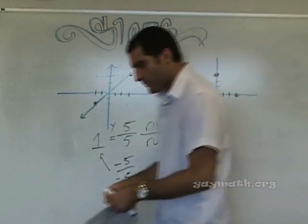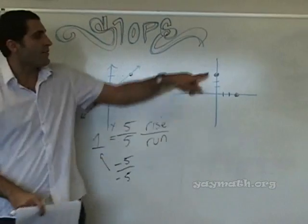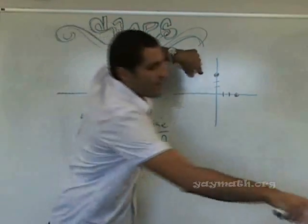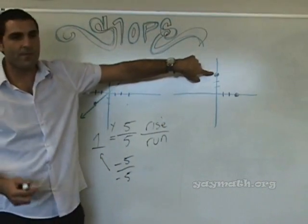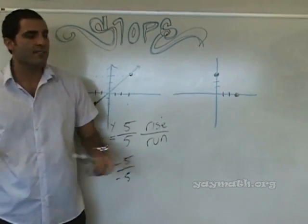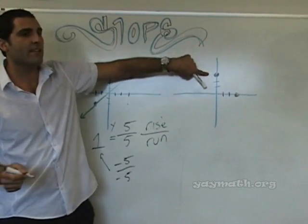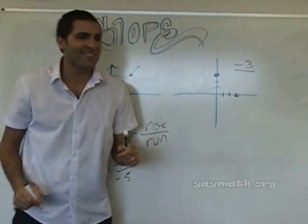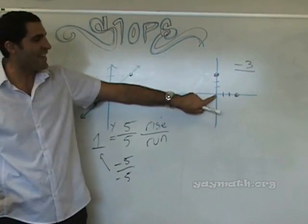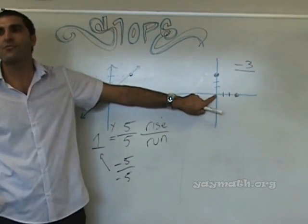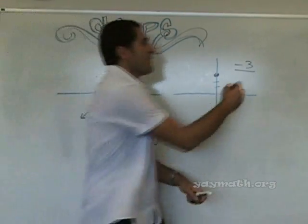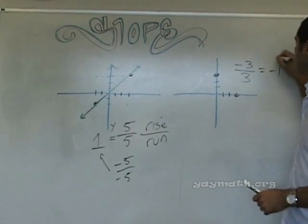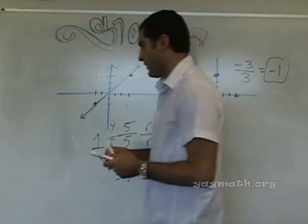Let's talk about this line. Starting at the top point, to get to the second point we go down first — down three — then right, which is positive. So the slope is negative three over positive three, which equals negative one. That's a negative slope.